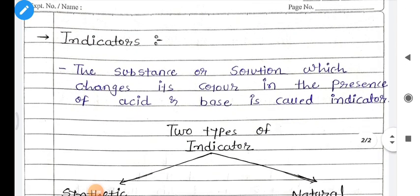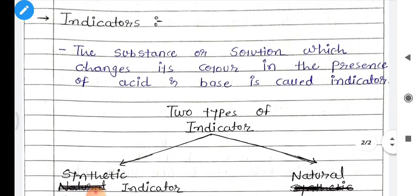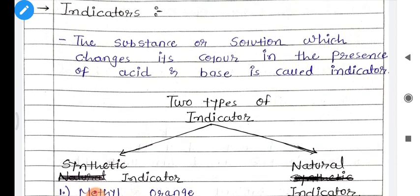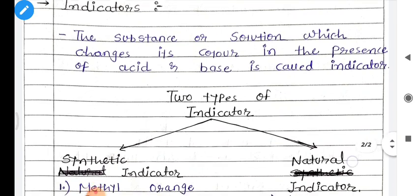The second topic is indicators. It is not advisable or good to taste each and every substance with our tongue, because it is frequently harmful to our body to taste certain unknown substances. For that purpose, we need some kind of other substance through which we can identify whether a substance is base or acidic without tasting it. The substance or solution which changes its color in the presence of acid and base is called an indicator.